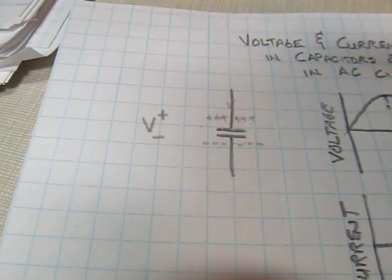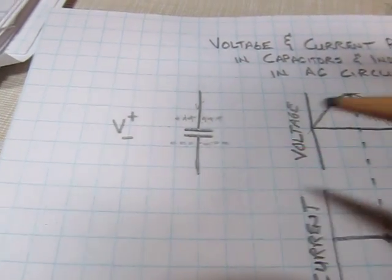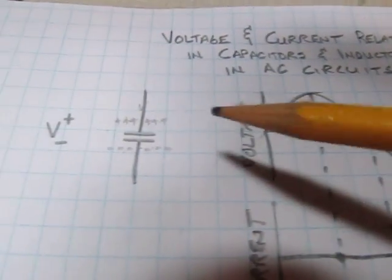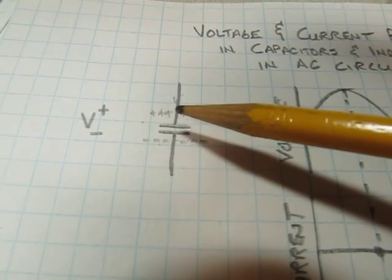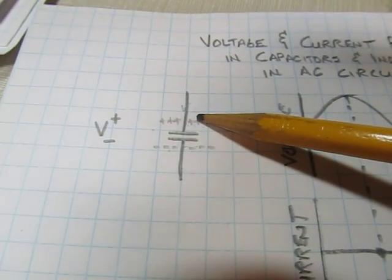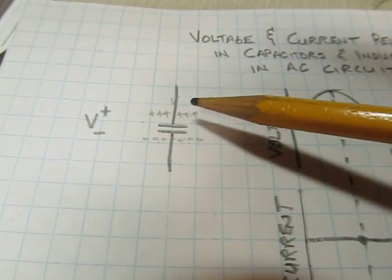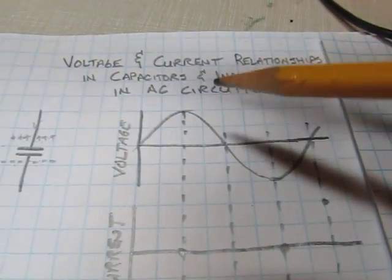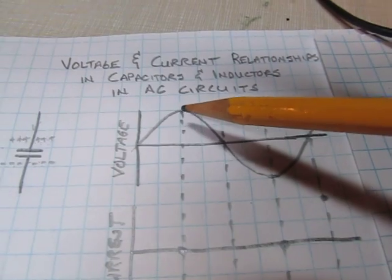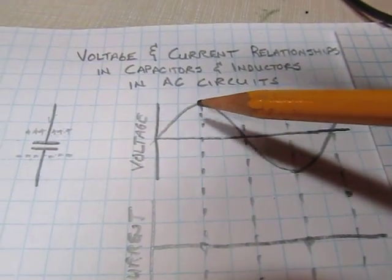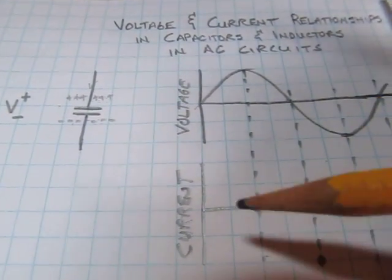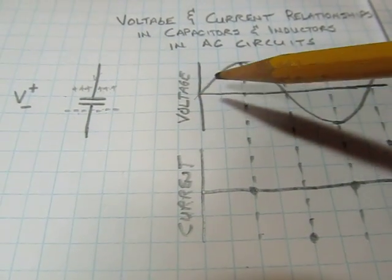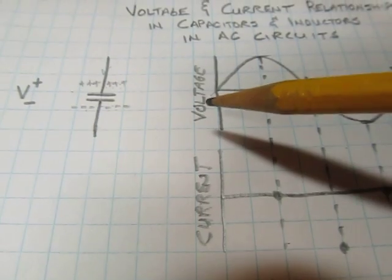Let's take a closer look at that relationship. Say we're applying an alternating voltage to a capacitor. If the voltage is sitting still and not moving versus time, there's no movement of charge. So at points in time where the voltage is not moving or is changing very slowly, the current is very low. Looking at a sinusoid, as the voltage reaches a peak it's barely moving, so there's essentially zero current at that point.